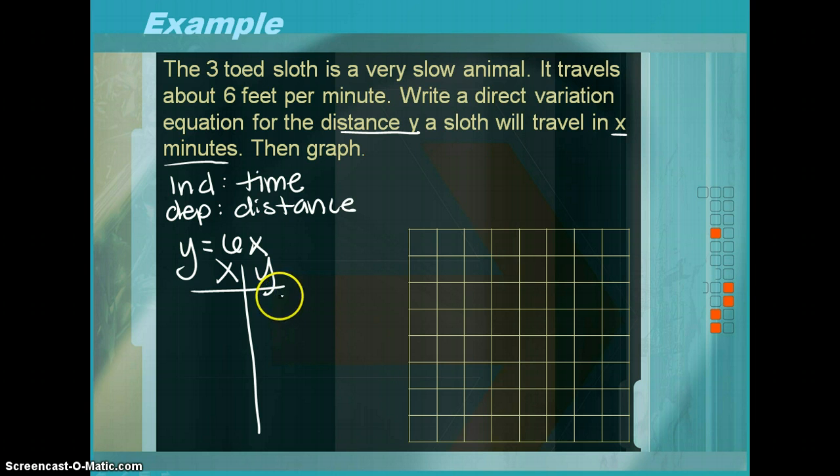Now, given the fact that we're talking about time and distance, negatives shouldn't exist. So you should do 0, 1, 2, and 3. So 0 times 6 is 0, so 6, then 12, then 18.